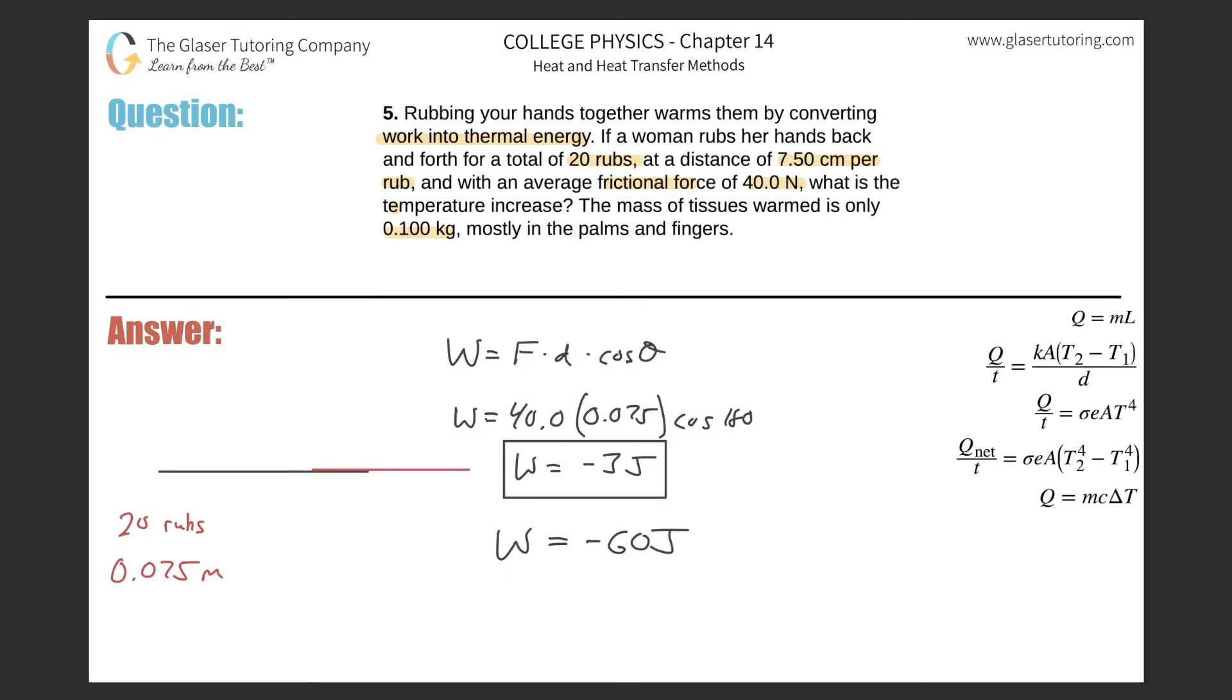If this is the energy that's lost, where does that energy go? It's gained in terms of thermal energy. So this work is basically converted into a positive 60 joules of thermal energy. You know what thermal energy is—the variable is Q. We just found Q.